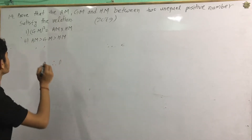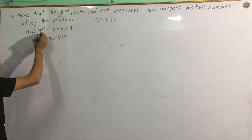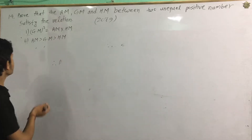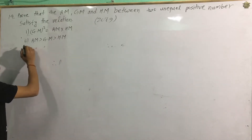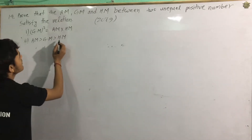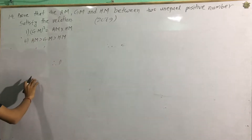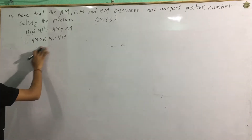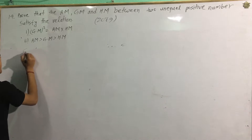The relation to prove is: GM squared is equal to AM into HM. We will satisfy this relationship for two unequal positive numbers.